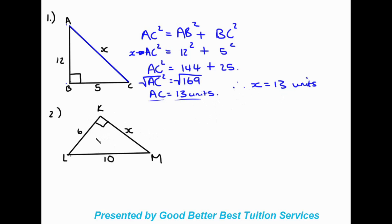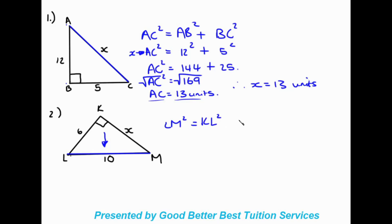Looking at number two now. First thing we do is identify our hypotenuse. The hypotenuse is opposite the right angle and is the longest side. Opposite the right angle is this line here, which is already given as 10 centimetres. They give us one other side but not the third side. We're used to using Pythagoras to find the hypotenuse, but here we need to find one of the other sides.